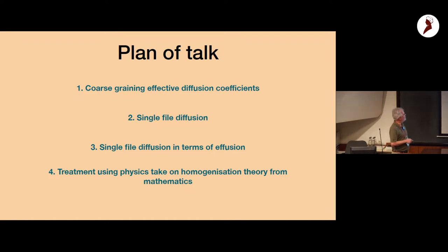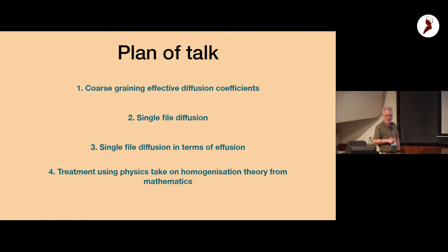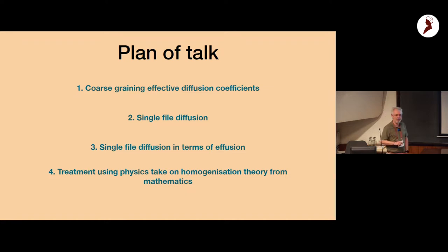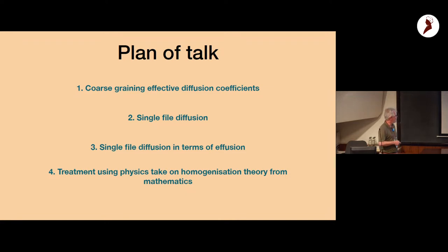One of the examples of coarse graining is macroscopic fluctuation theory, which is used to study single file diffusion by people like Tripid, Kieran Maik, and Paul Krapivsky. I'm going to talk about single file diffusion in terms of effusion — basically a one-sided leaking problem — and how you can prove a rather intuitive result using homogenization theory from mathematics.